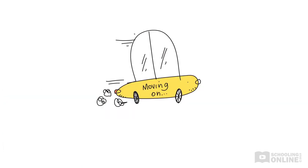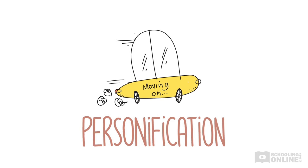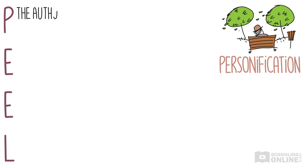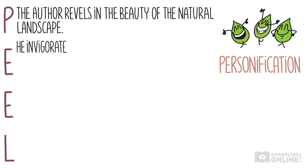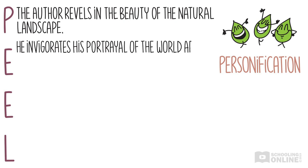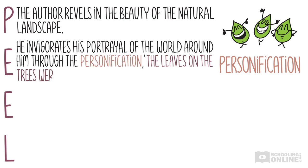Moving on to personification, our example was 'the leaves on the trees were dancing.' The author revels in the beauty of the natural landscape. He invigorates his portrayal of the world around him through personification: the leaves on the trees were dancing.